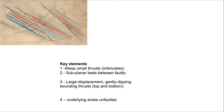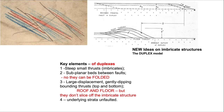Let's take Peach's key elements: small steep imbricate thrusts separating sub-planar beds, bounded top and bottom by gently dipping bounding thrusts, and the underlying structure unfaulted. In the duplex model, these elements change. The beds and faults are no longer sub-planar — they become folded by the underlying structures. In common with the Peach idea, there is a roof and a floor thrust, but they don't slice off the imbricate structure. Rather, the roof thrust tends to be bulged by the underlying imbricates.